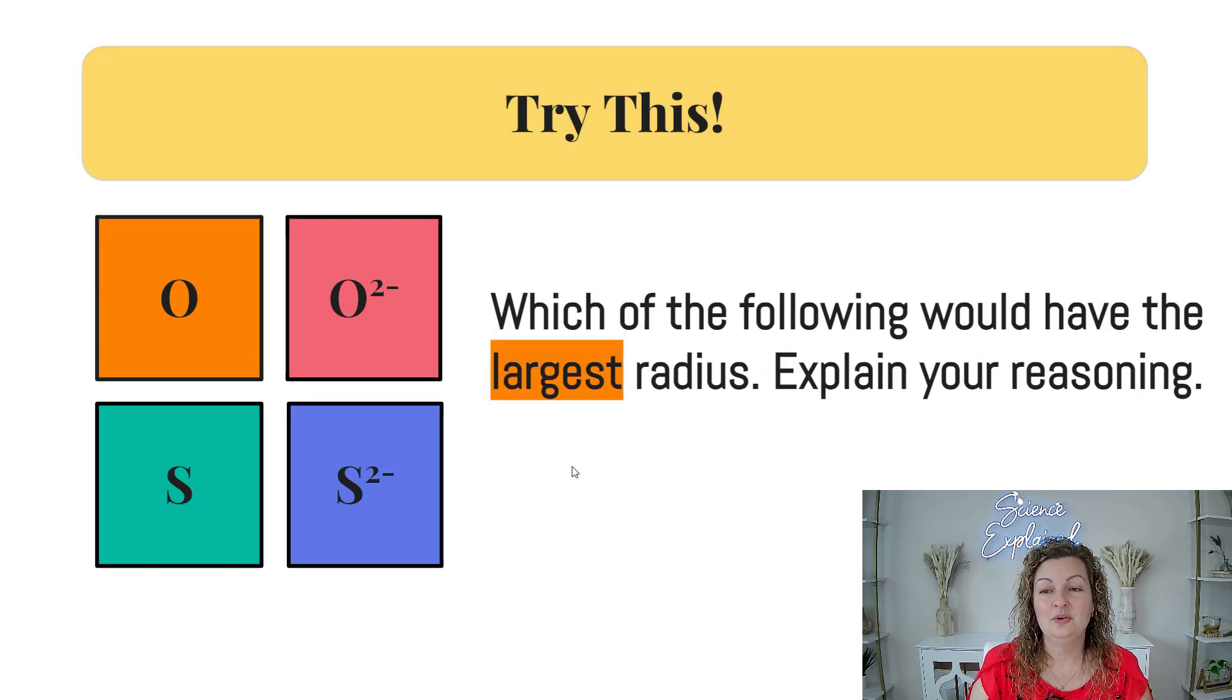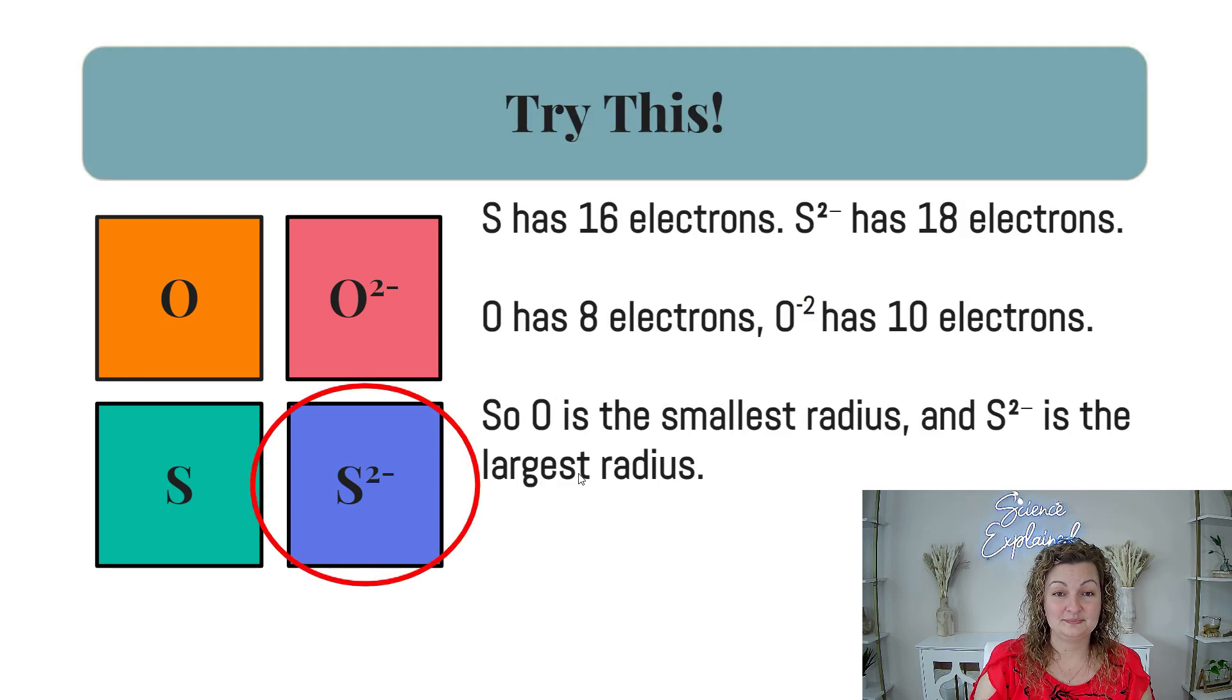All right, try these. Which one has the largest radius? Go ahead and pause. All right, let's check out the answer. So sulfur, if you're looking at the periodic table, does have 16 electrons and sulfur negative two has 18 because we've gained two electrons now. Oxygen has eight. And like we said before, oxygen negative two would then have 10 because we're gaining two. So oxygen is going to be the smallest, but the sulfur negative two is going to have the largest, which is what the question asks for.